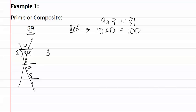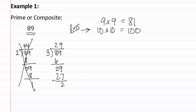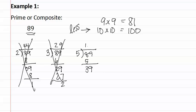We will try the next prime number, which is three. Three goes into eight two times, and three goes into twenty-nine nine times. We once again have a remainder, therefore three does not evenly divide into eighty-nine. Our next prime number is five. Five goes into eight one time, and five goes into thirty-nine seven times. We still have a remainder, therefore five does not evenly divide into eighty-nine.